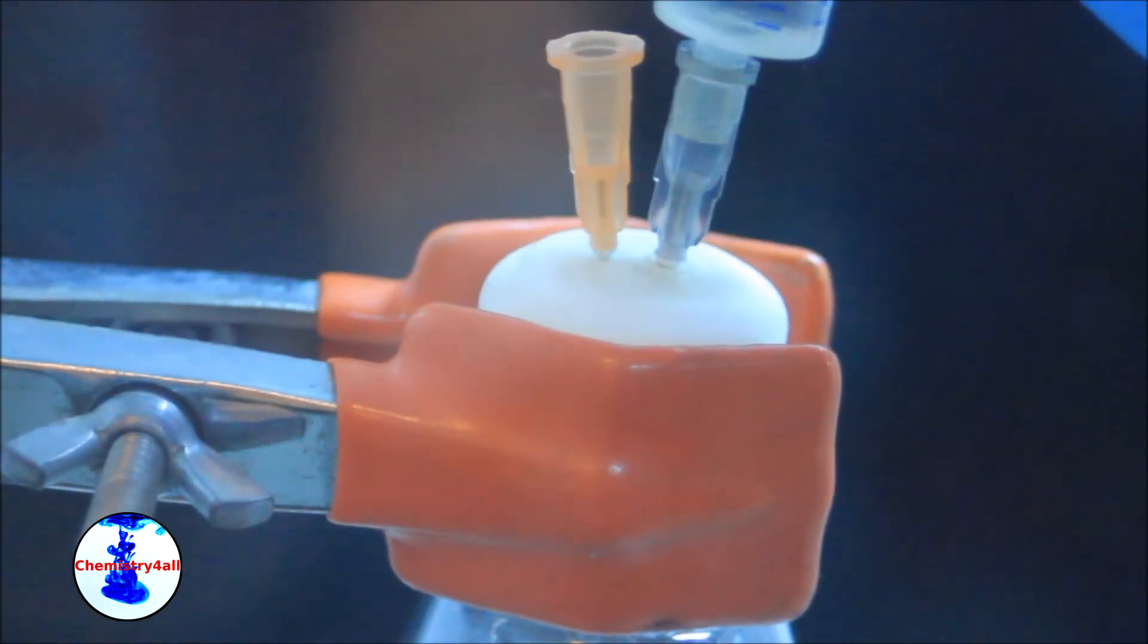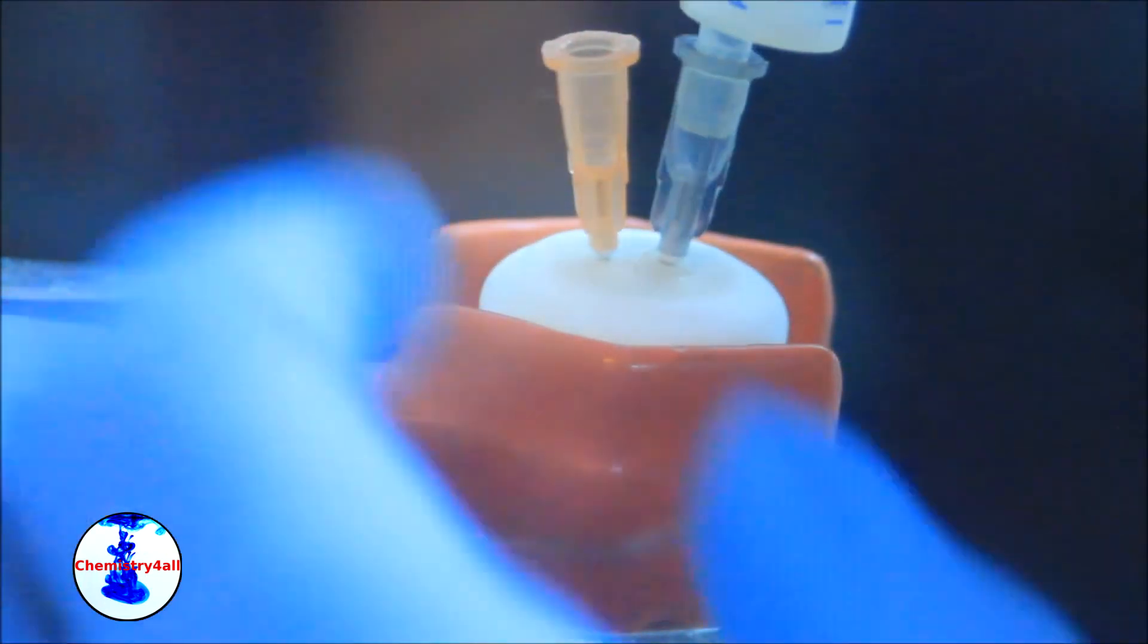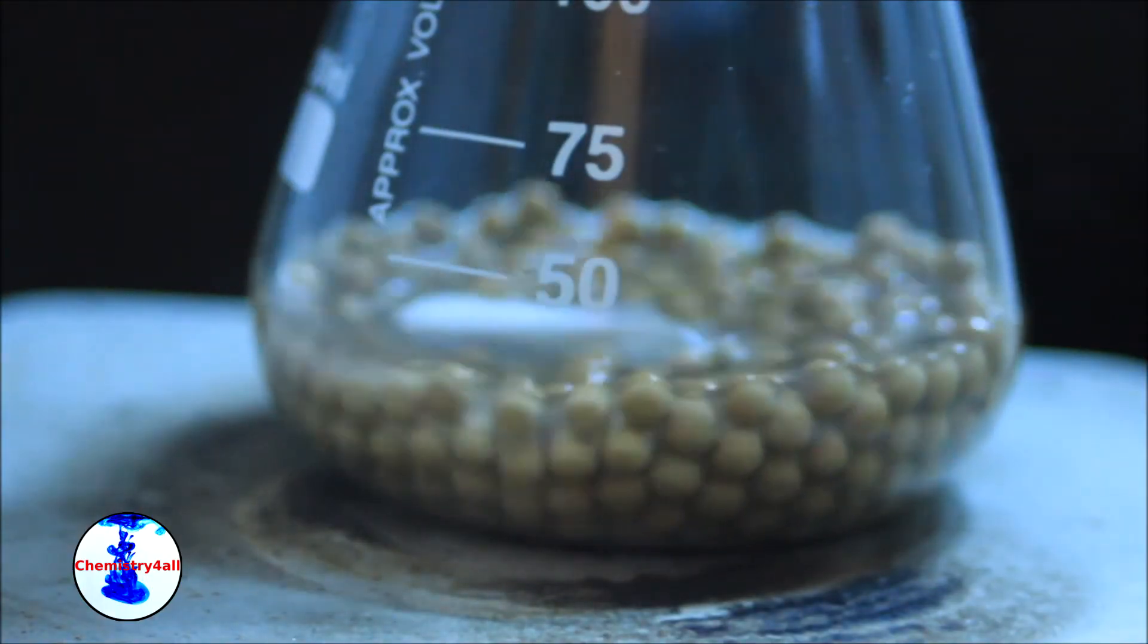Finally, we pour the ethanol into the flask itself. The amount of ethanol used should be about three times greater than the net volume of the molecular sieves used.